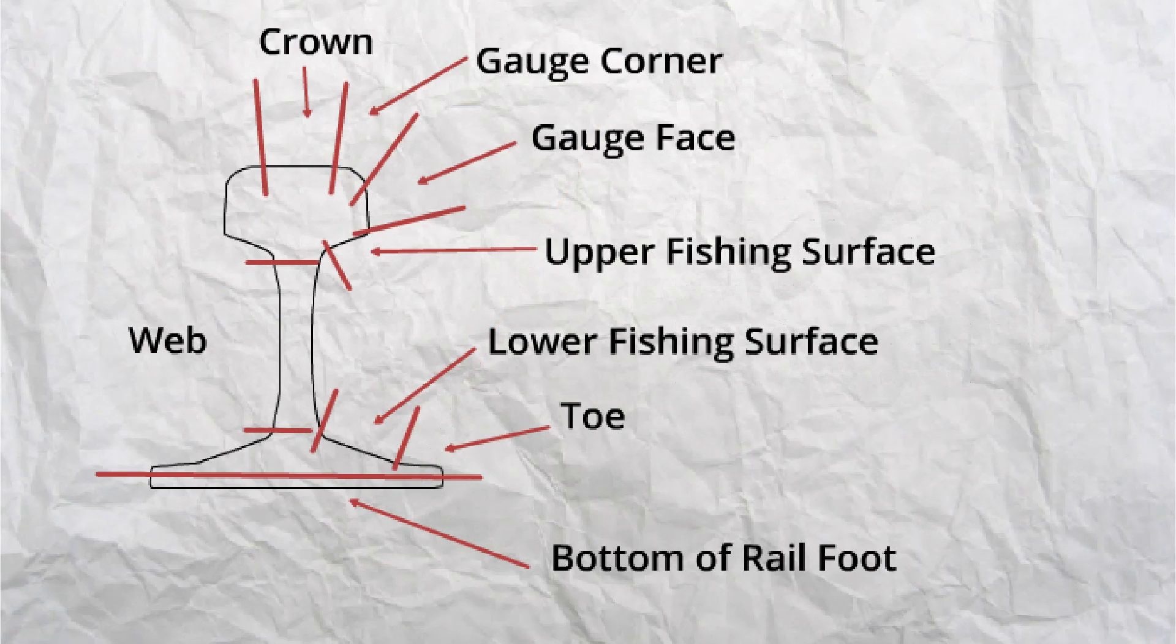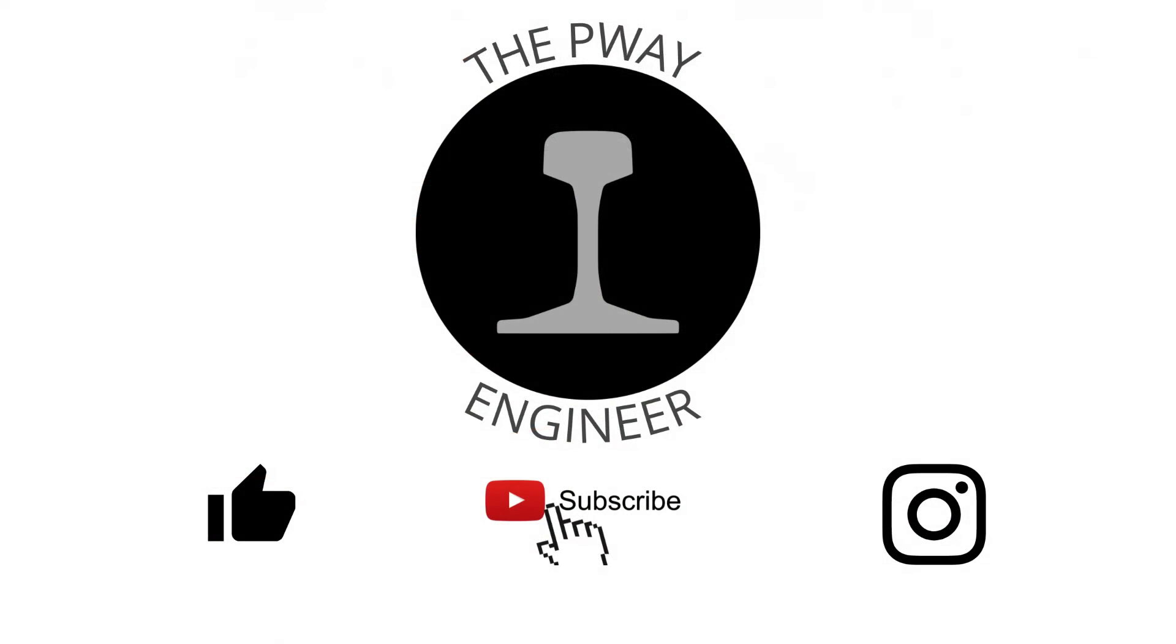So, there we have the different parts of the rail. You can now talk about rails with a greater level of detail, and can see that every part of the rail has its own function to perform. Thank you for taking the time to watch this video, I hope you have found it useful. Please do not forget to give it a like and hit that subscribe button.